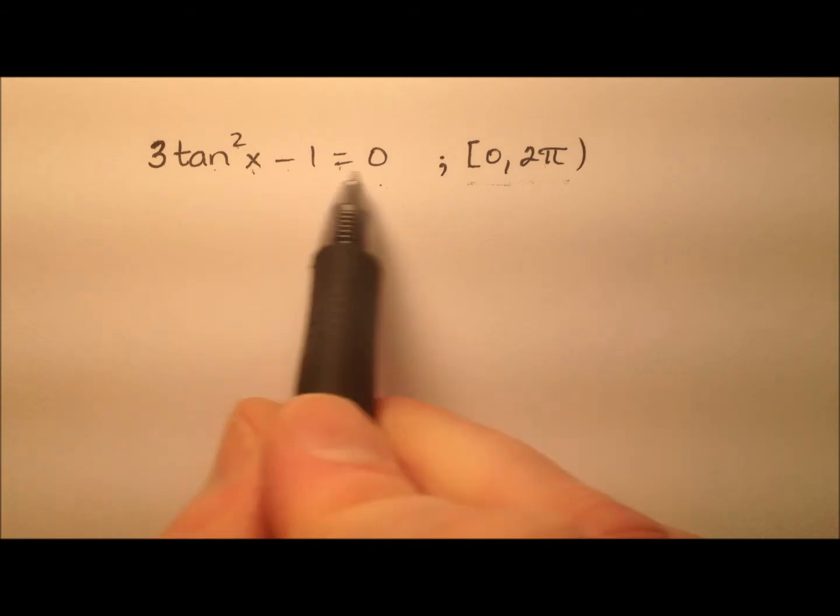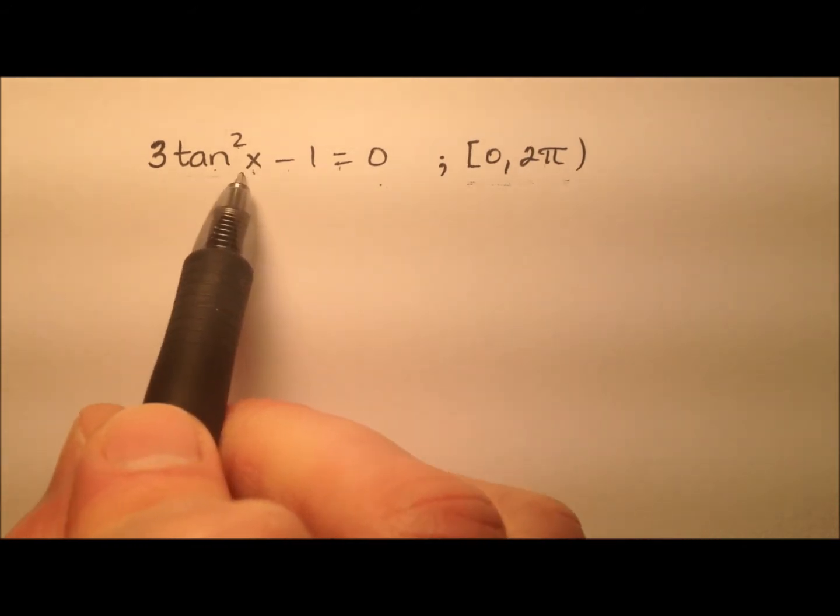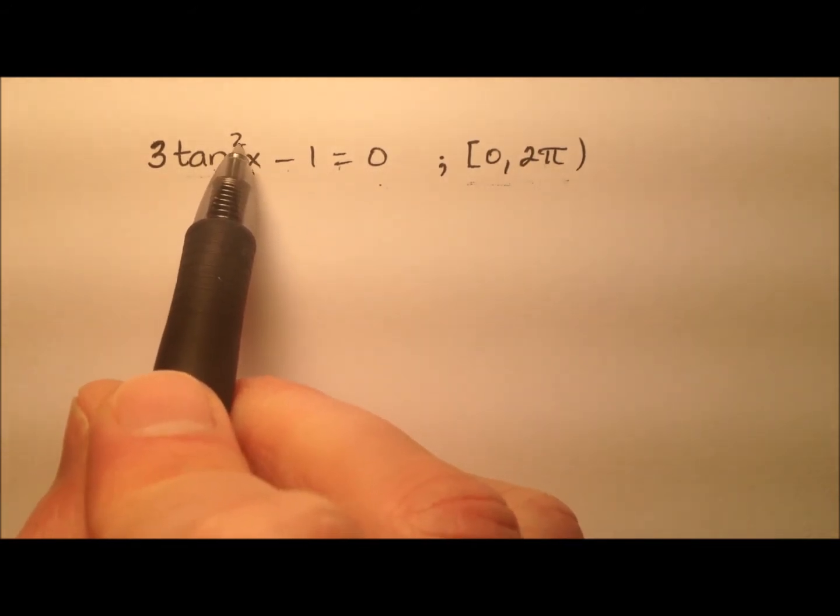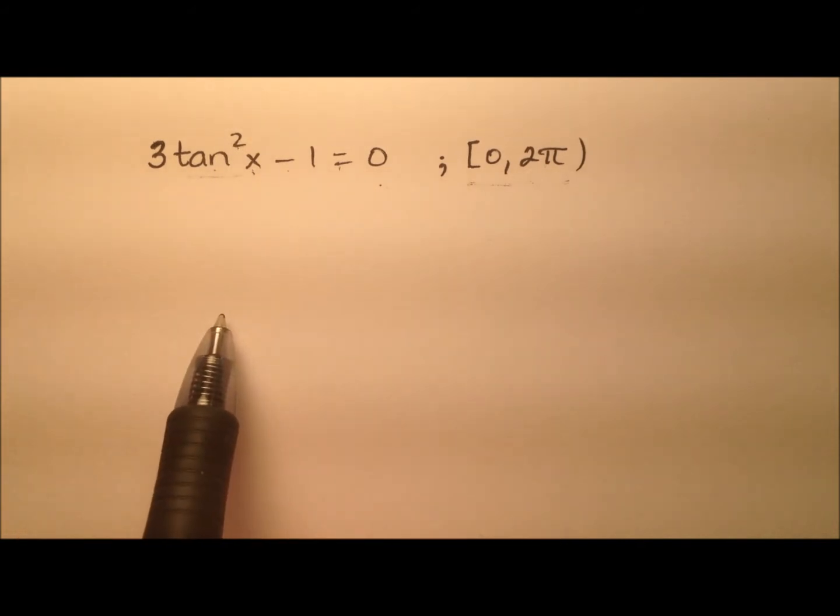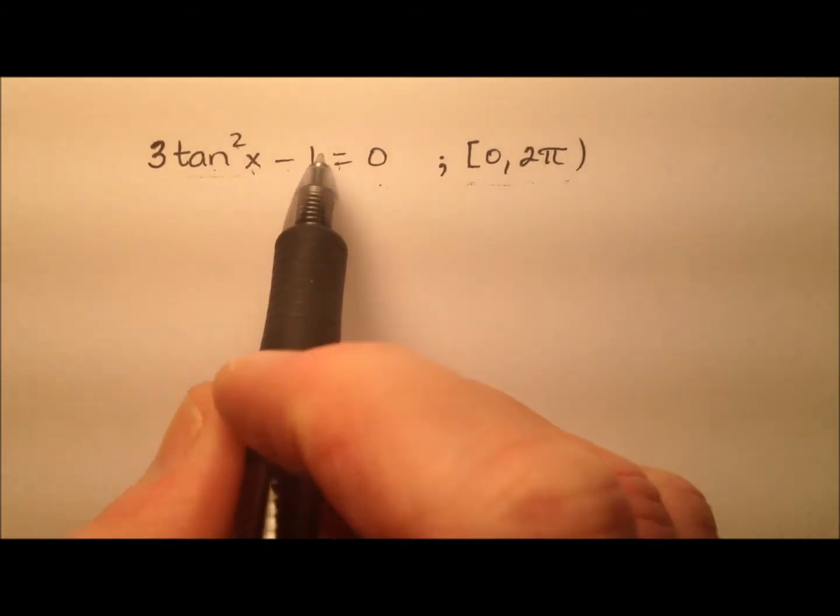Okay, so looking at this equation, it seems like I just have tangent in one place, and it is a tangent squared, so I know ultimately I'll have to be taking the square root of both sides, but not quite yet.